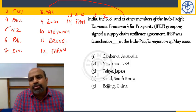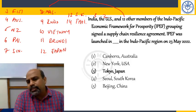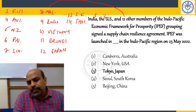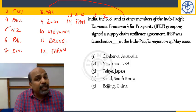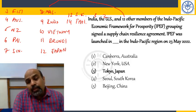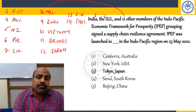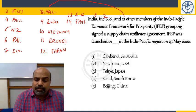Canberra is the capital of Australia. New York is the biggest city in the United States. Tokyo is the biggest city and capital of Japan. Seoul is the capital of South Korea. Beijing is the second biggest city and capital of China.